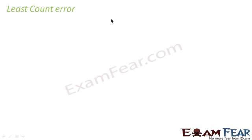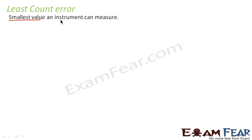Next we would discuss Least Count Error. What is Least Count? Least Count is the smallest value an instrument can measure. For example, you must be having a scale at your home — the normal scale which you use in your geometric box.